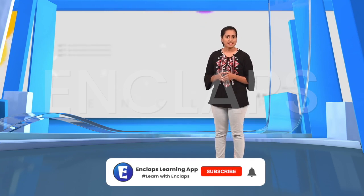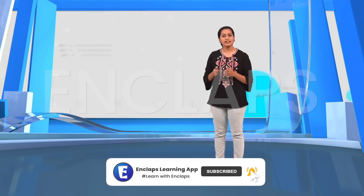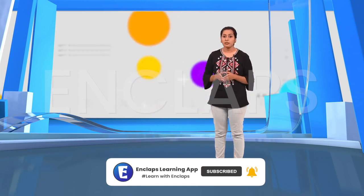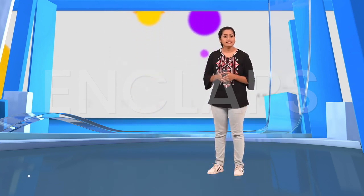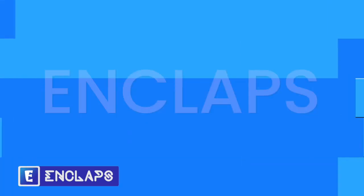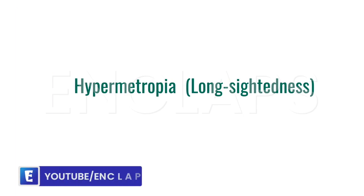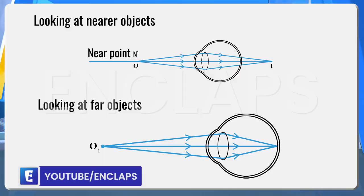Now, let's see some of the eye defects and their reasons and remedies. Some people cannot see nearby objects clearly but they can see distant objects. This type of eye defect is called hypermetropia or long sightedness. Let's see what is the reason behind this.